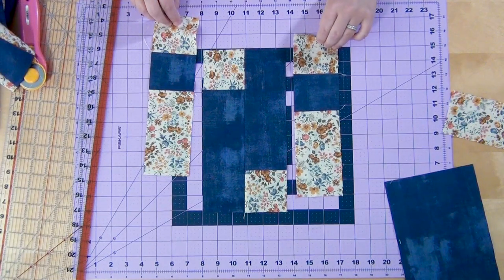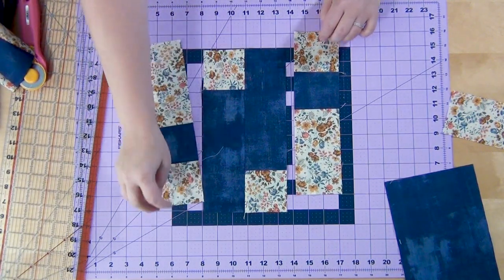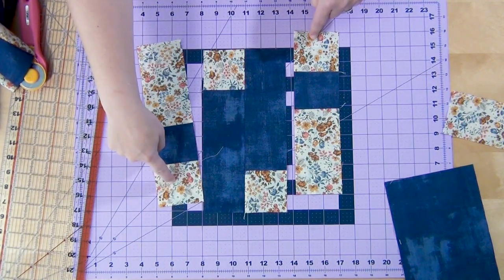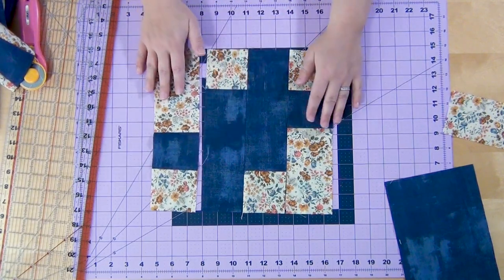And again, we're going to flip flop. So you're going to take one and flip it. You want your squares to be on opposite ends. And you're going to sew this piece to this side and this piece to this side.